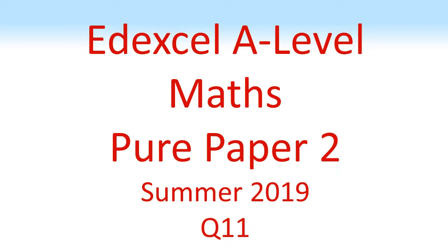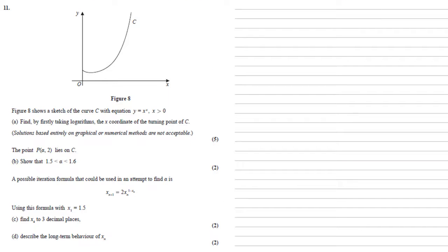Fxl A Level Maths, Pure Paper 2, Summer 2019, Question 11. Figure 8 shows a sketch of the curve C with equation y equals x to the power of x for x larger than zero. For part A we need to find, by taking logarithms, the x-coordinate of the turning point of C.